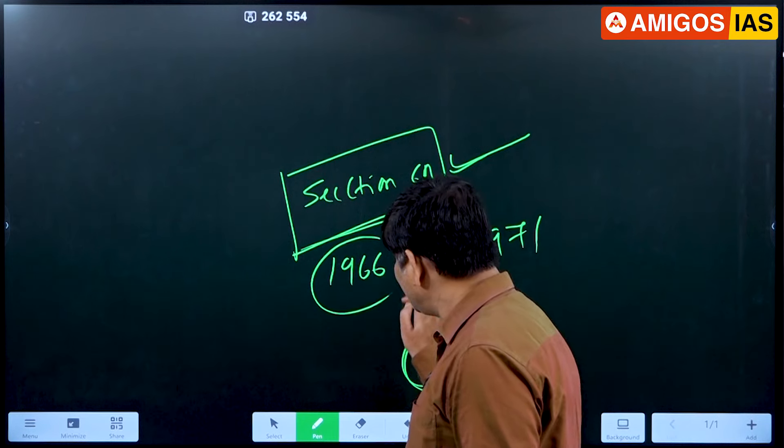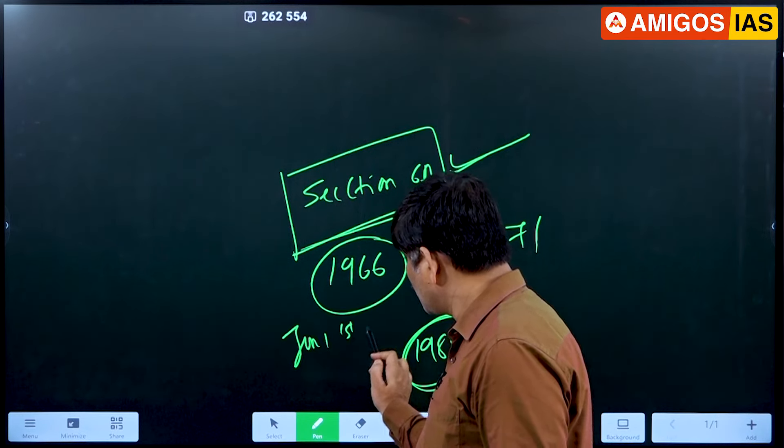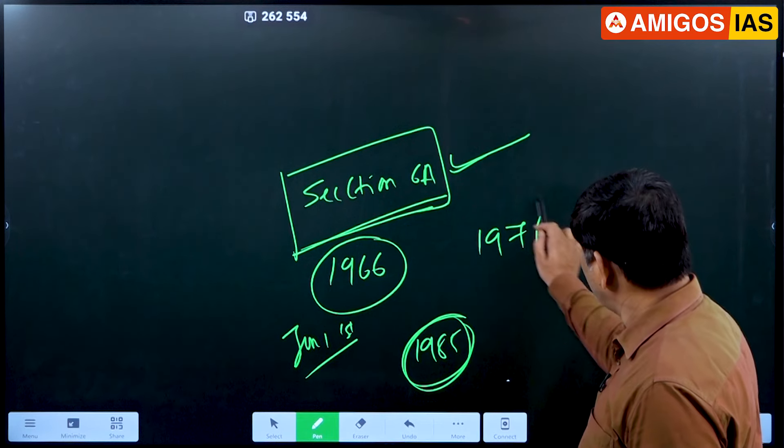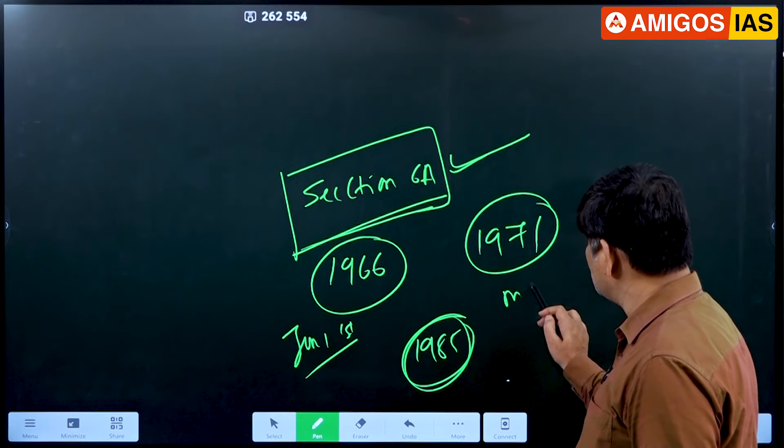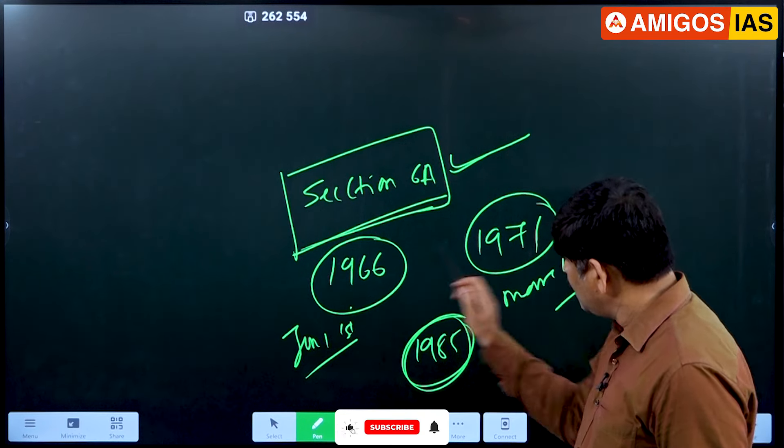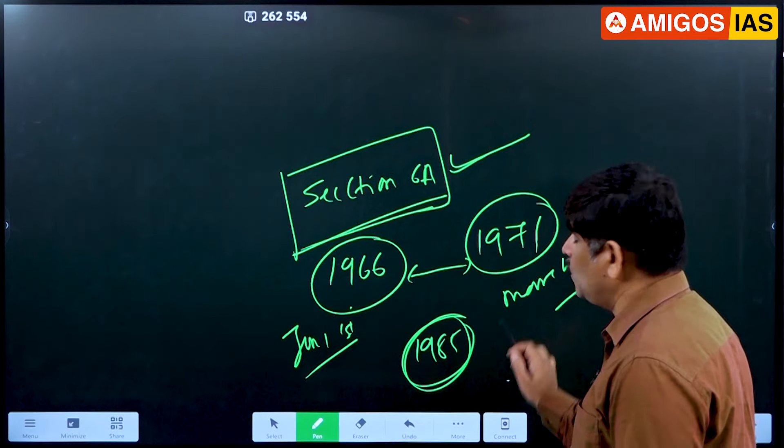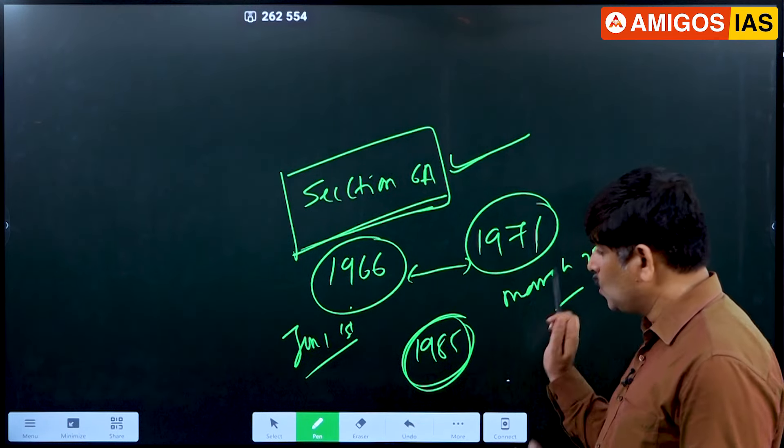1966 January 1st. 1971 March 25th. This is a cut-off date. These dates are important milestones. Since this month, the Bharata Nanjangam is the first one.